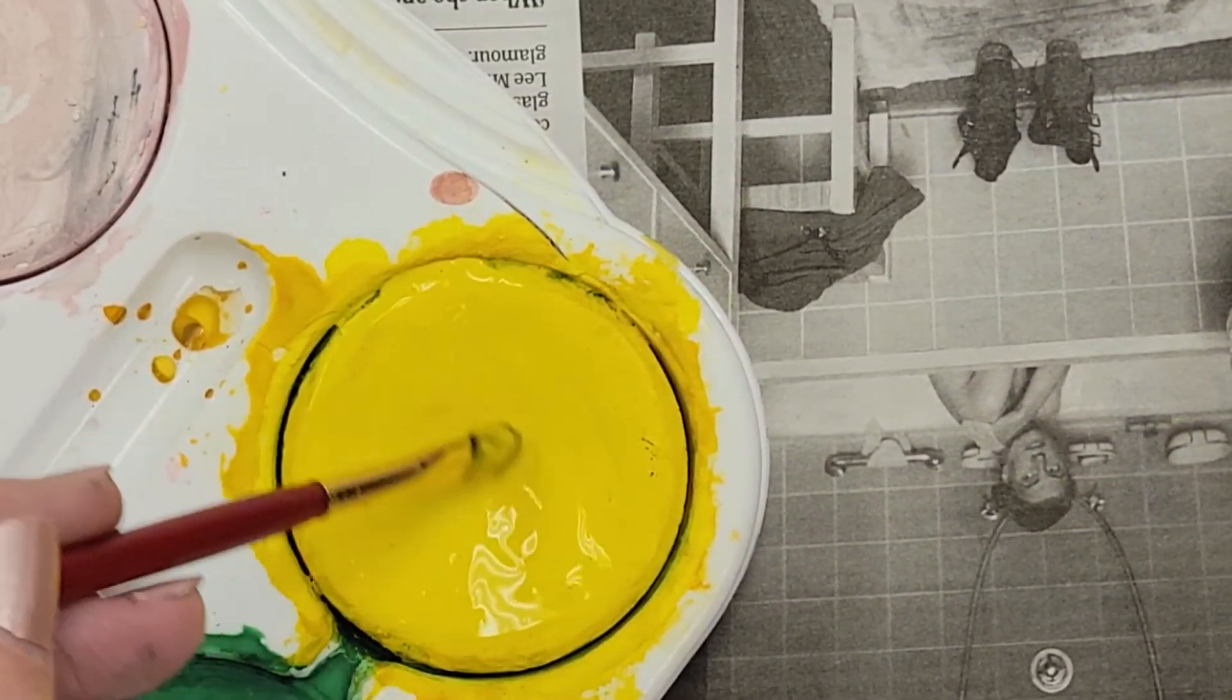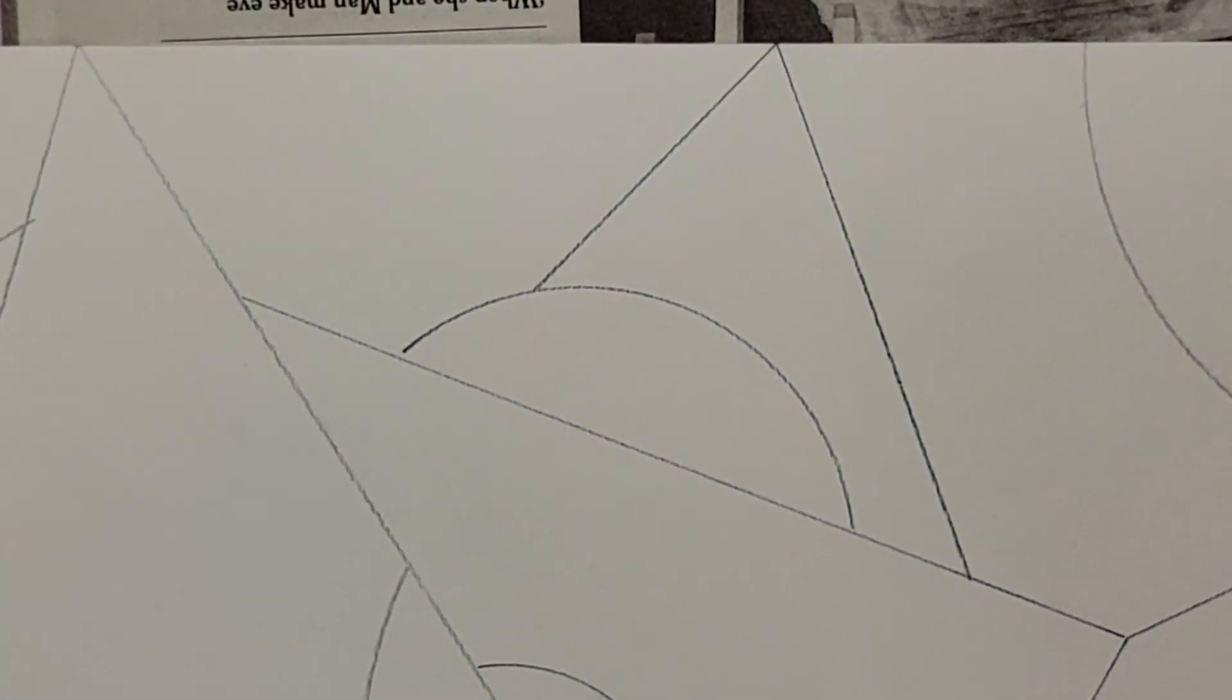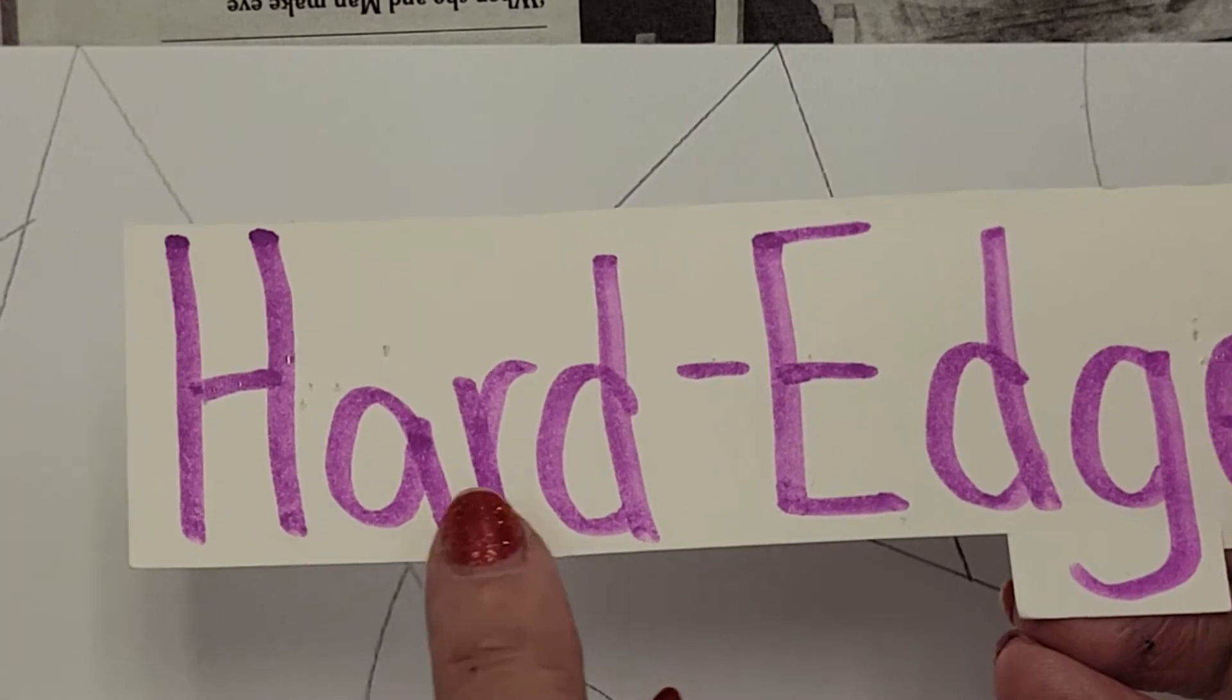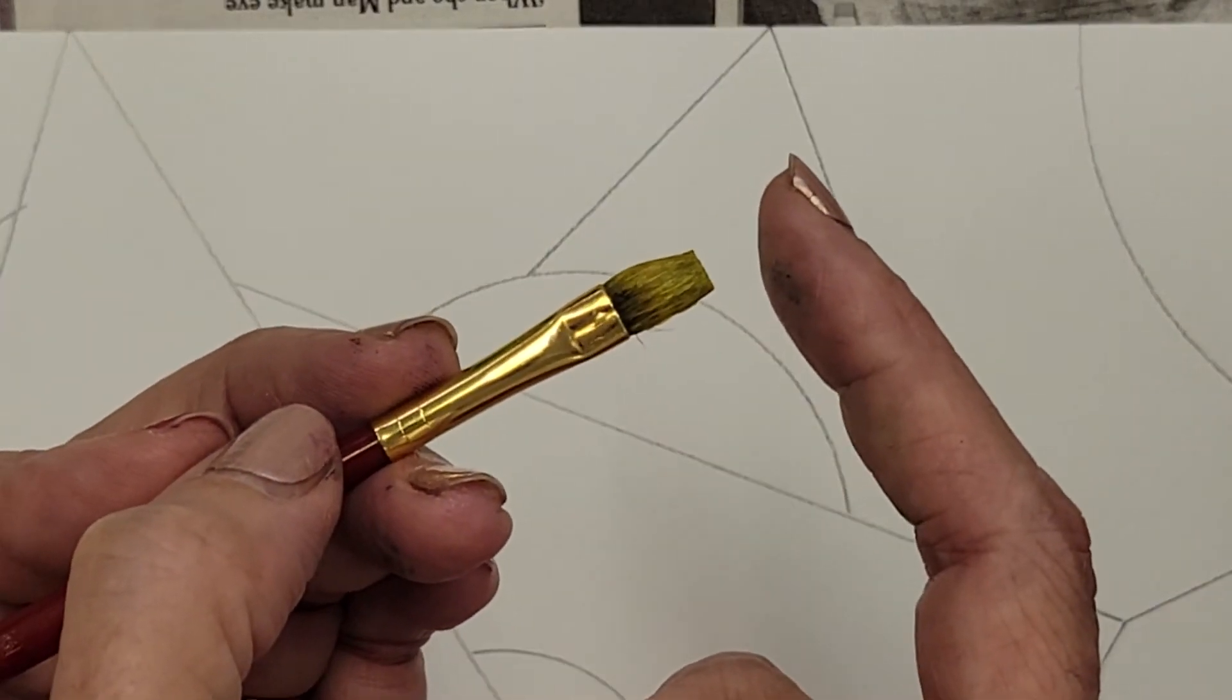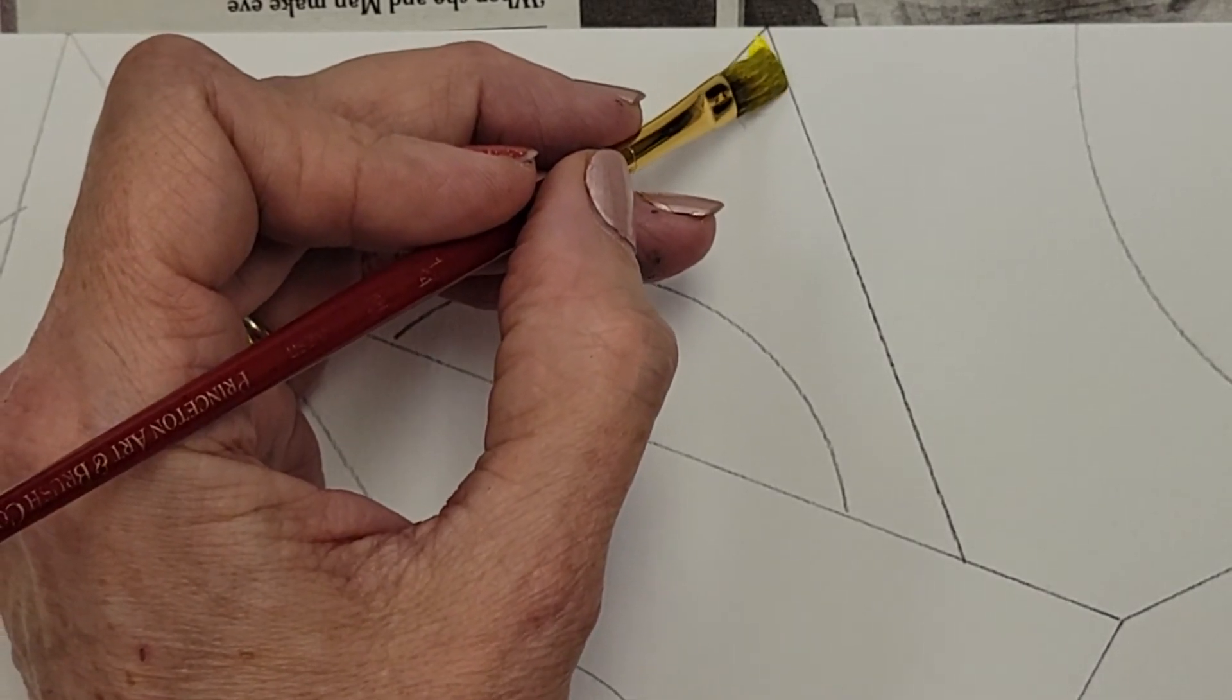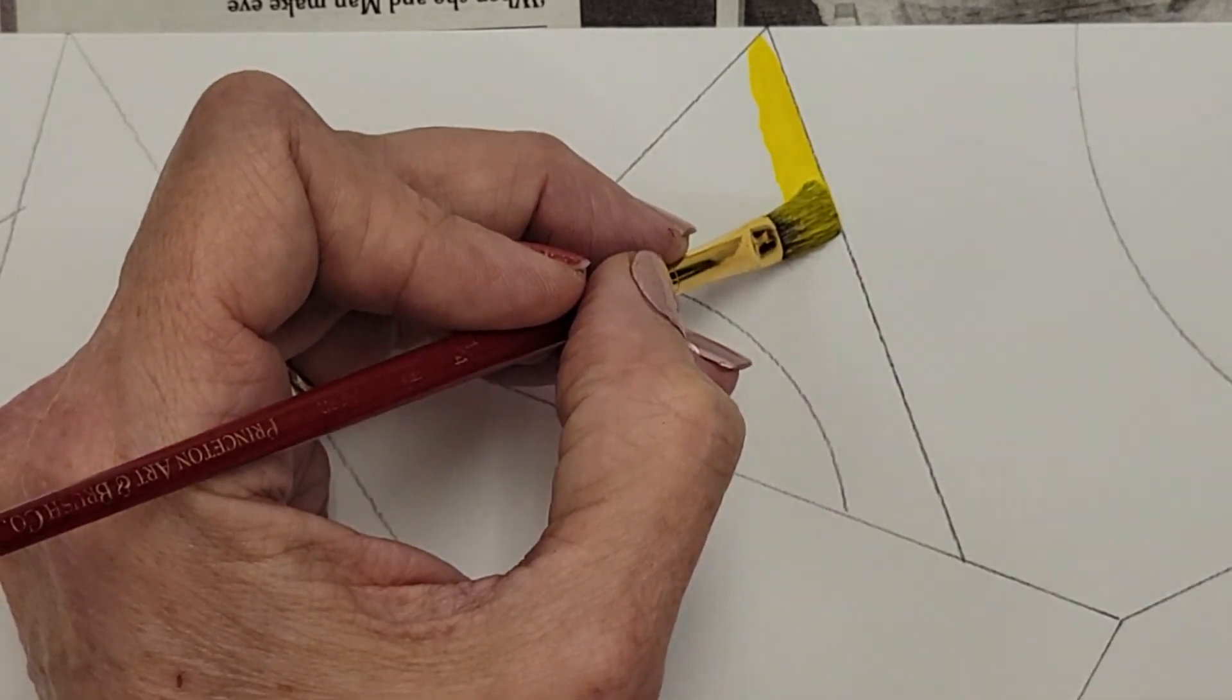Once my paint is a nice consistency, I'm ready to start. Now the trick about a hard edge painting is I have to work really carefully to keep my edges clean and neat. So what that means is I'm going to take my brush with the paint, and I like to hold the brush so that I can see exactly where the tip of the brush is going. I can see this edge of my paintbrush.